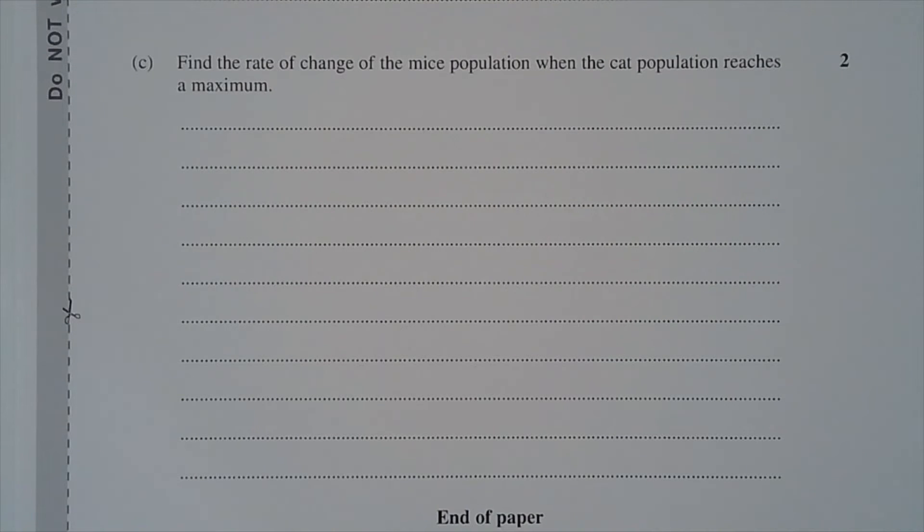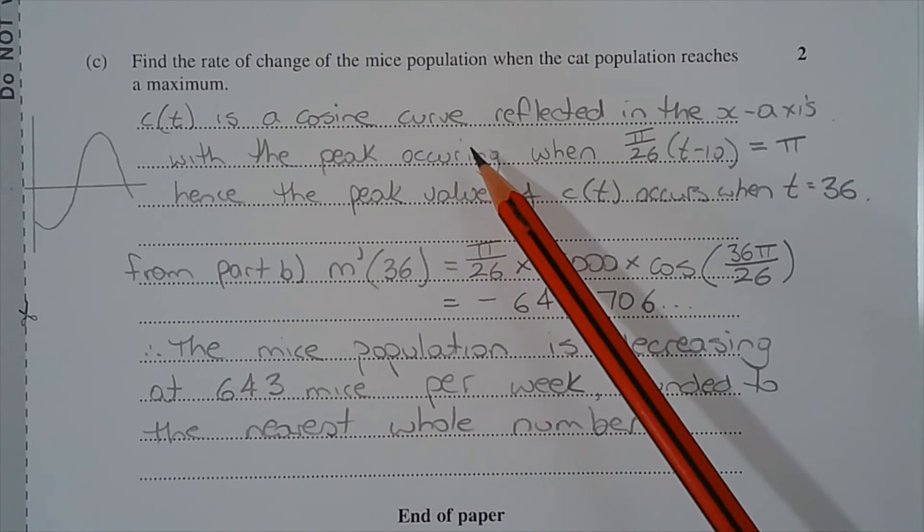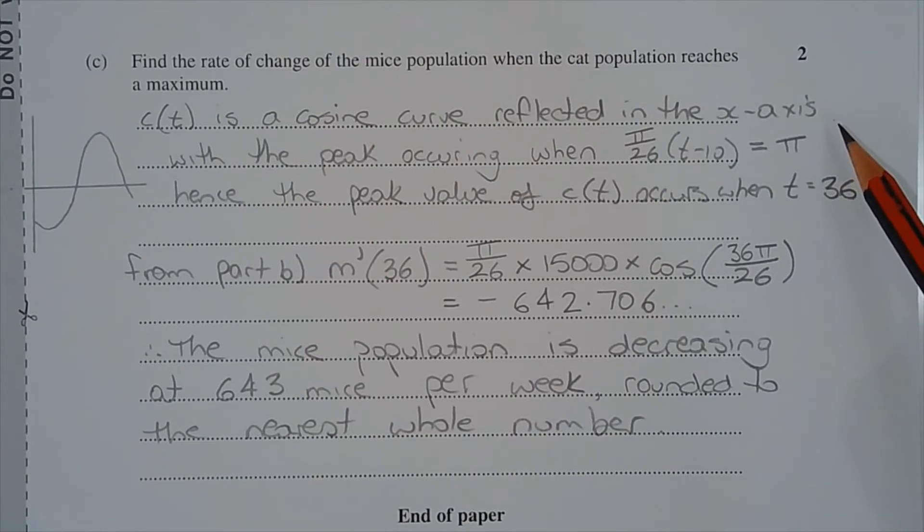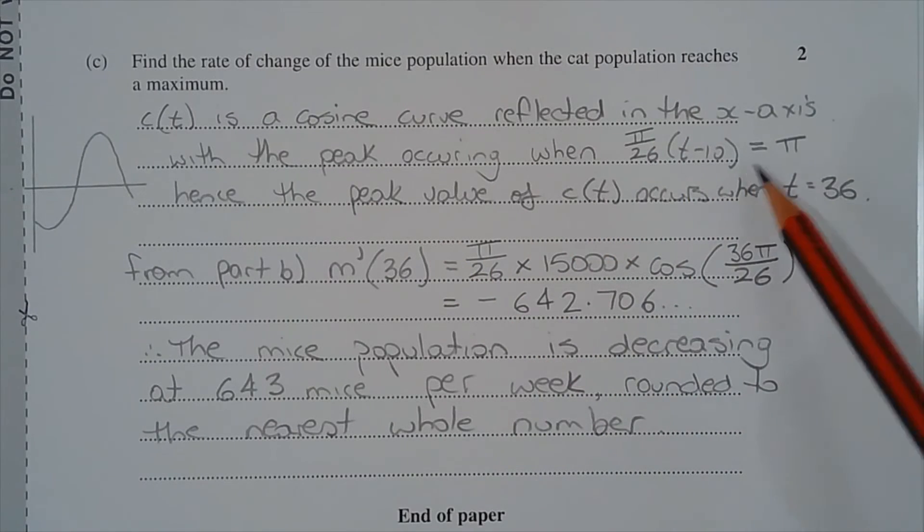Part C. Find the rate of change of the mice population when the cat population reaches a maximum. c(t) is a cosine curve that's been reflected in the x-axis, with the peak occurring when the angle (pi/26)(t - 10) equals pi radians. If you compare that with the standard cosine curve y equals cos x, the minimum value occurs when x equals pi radians. So reflecting that cosine curve in the x-axis, what was the minimum becomes the maximum.